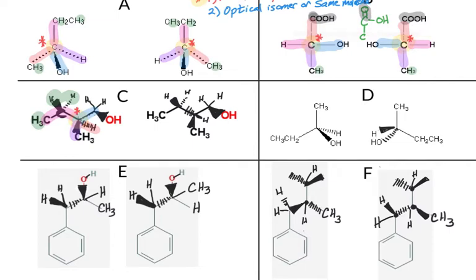Looking at the last carbon in set C, it has two hydrogens, so we know right away that one is not asymmetric. The other molecule in set C matches identically: not asymmetric, not asymmetric, asymmetric, and not asymmetric.